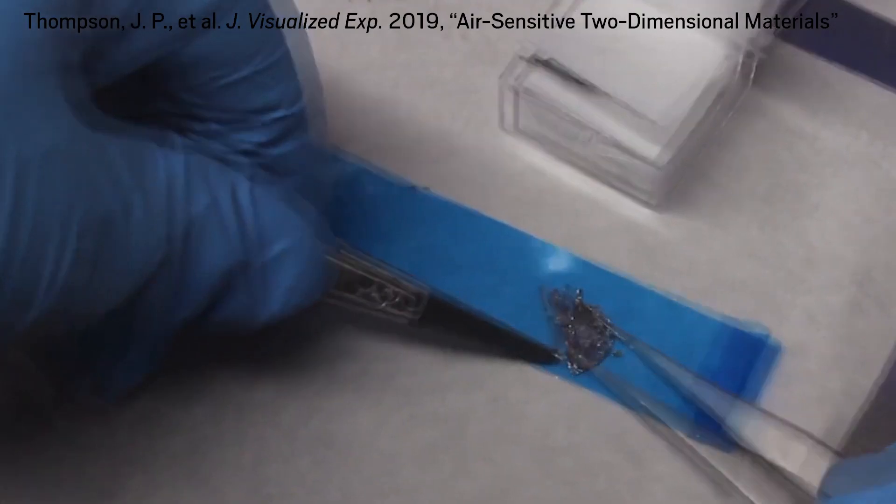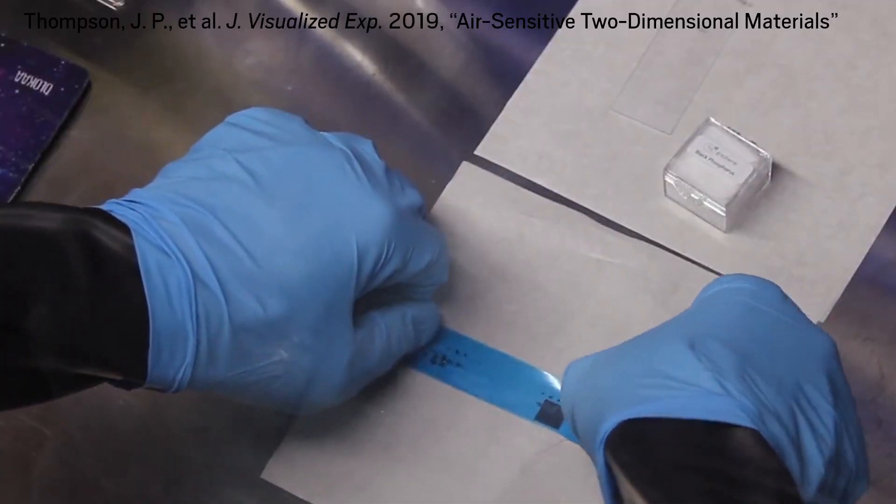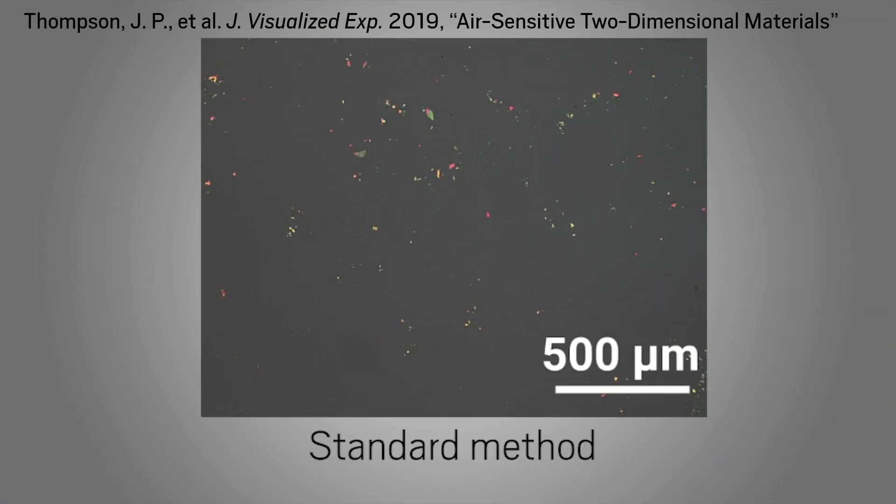To make flakes of some of the newer 2D materials, researchers commonly peel them away from a larger block of material with adhesive tape. But this method often results in small or less-than-pristine flakes.